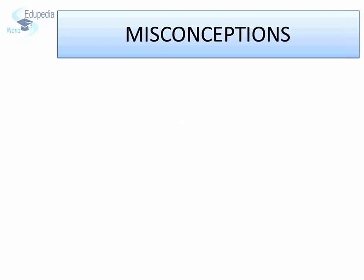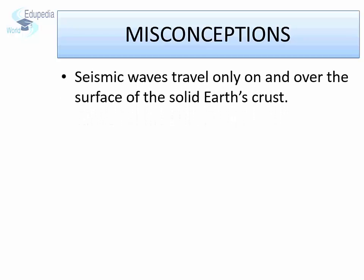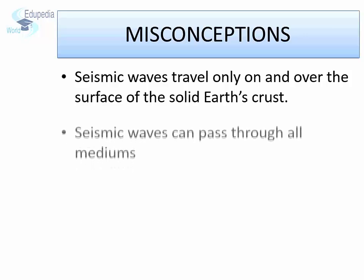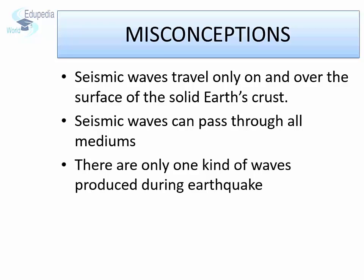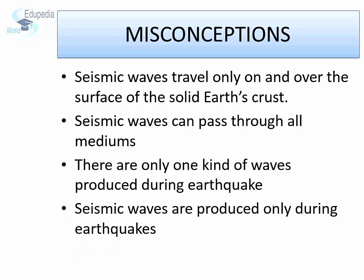Before we begin our exploration about seismic waves, let us look at some common misconceptions. Misconception one: seismic waves travel only on and over the surface of the solid Earth's crust. Misconception two: seismic waves can pass through all mediums. Misconception three: there is only one kind of seismic wave produced during an earthquake. Misconception four: seismic waves are produced only during earthquakes. All these are myths. Let's explore the facts.